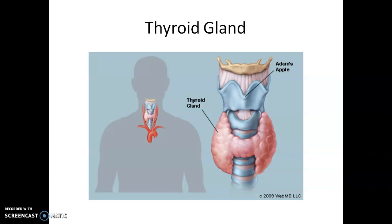Observe the figure, children. The thyroid gland is composed of two lobes which are located on either side of the trachea. Both the lobes are interconnected with a thin flap of connective tissue called the isthmus.